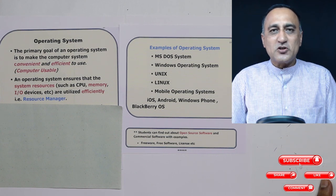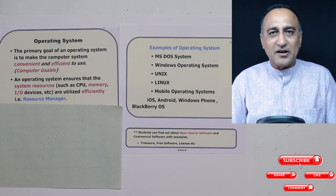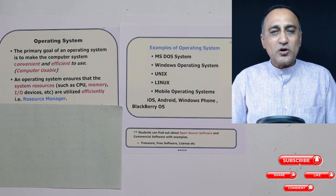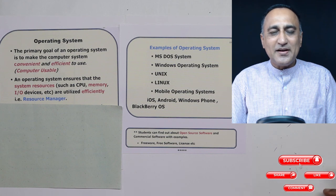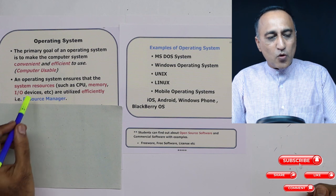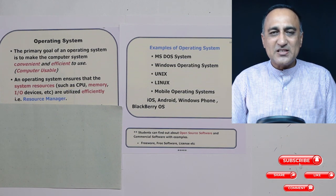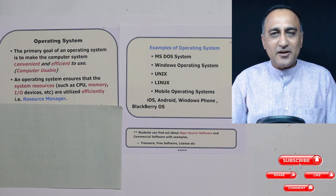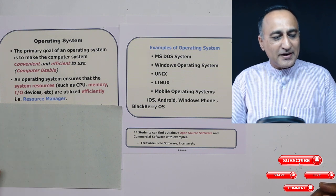The next important function of the operating system is that it acts as a resource manager. The resources of a computer include main memory, the CPU, files stored, secondary memory, and so on. The operating system ensures that all these resources are used efficiently and properly. I will explain what this means when we discuss each function in a little more detail.